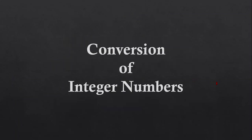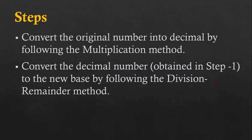Now I am going to convert integer numbers first. First, have a look at the steps. The first step is to convert the original number into decimal by following the multiplication method. You have to convert the source or original number into decimal first, and then you have to convert the decimal number into the required base number by following the division remainder method. These are the two steps we have to follow.